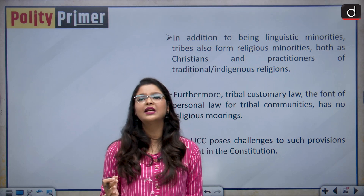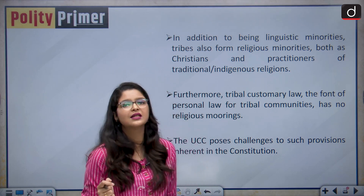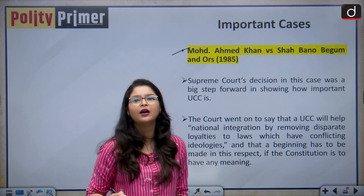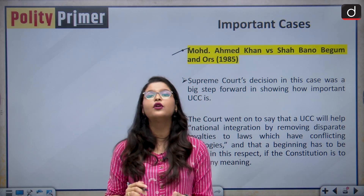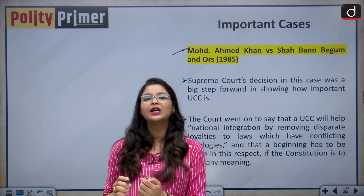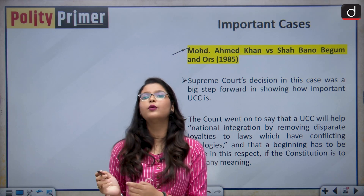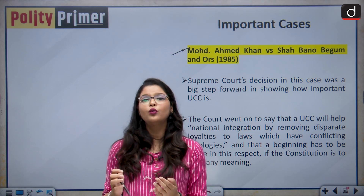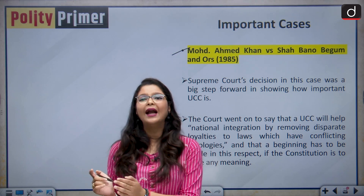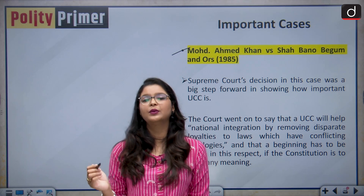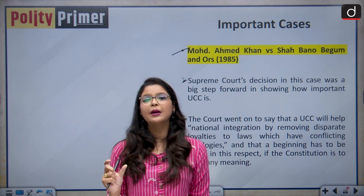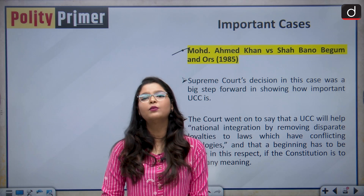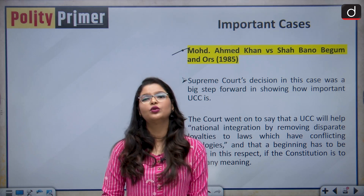Let us see some of the important cases in this regard and the opinion of our Honourable Supreme Court. The first case is Mohammed Ahmad Khan vs. Shah Bano Begum. This was the first step the Supreme Court took to recognize the need of a Uniform Civil Code. In this case, the Supreme Court guaranteed the right to maintenance to a Muslim woman who was married for 40 years and then divorced, and gave her the right to maintenance even beyond her iddah period. This was a very progressive step, and in this case the Supreme Court recognized the need of having a Uniform Civil Code and the diversity in personal laws in relation to maintenance.